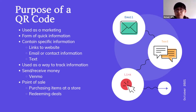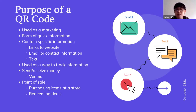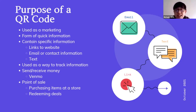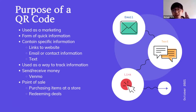QR codes are also used to send and receive money. One of the more well-known companies is Venmo. If you want to send money to a friend or family member, or split a restaurant bill with five people and you don't have cash, someone can show you their QR code. You scan that QR code with your app on your smartphone or tablet and send them money like that.